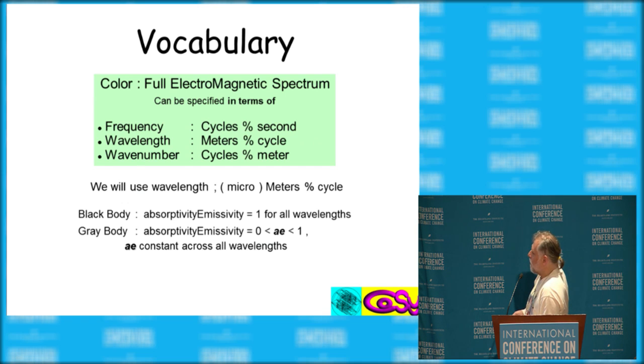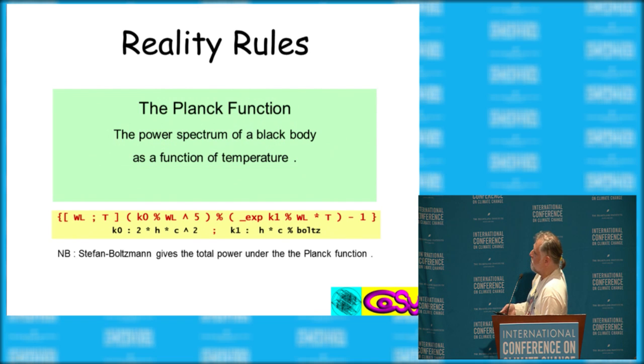And a black body has got absorptivity equals emissivity. Gray body, it's less than, somewhere between one and zero. And here's the other, last equation. This is the Planck function,